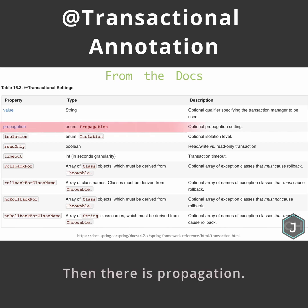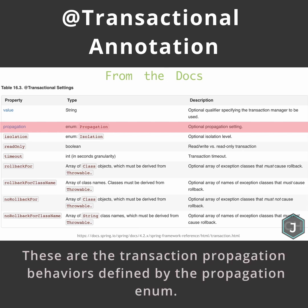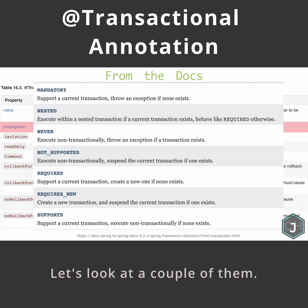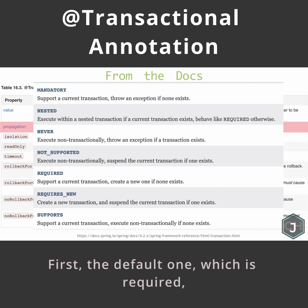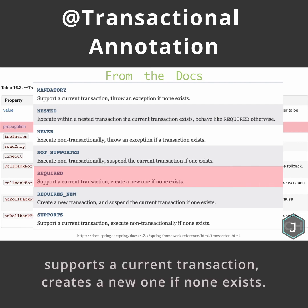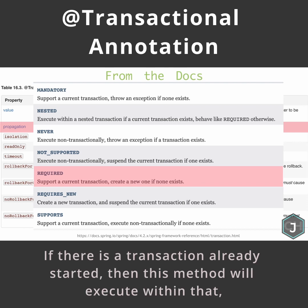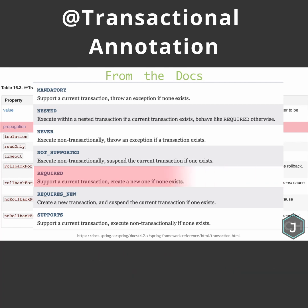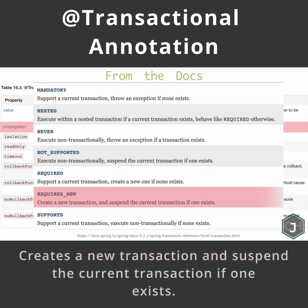Then there is propagation. These are the transaction propagation behaviours defined by the propagation enum. Let's look at a couple of them. First the default one, which is required — it supports a current transaction and creates a new one if none exists. If there is a transaction already started, then this method will execute within that, otherwise a new one will be created. Then there is requires_new, which creates a new transaction and suspends the current transaction if one exists.